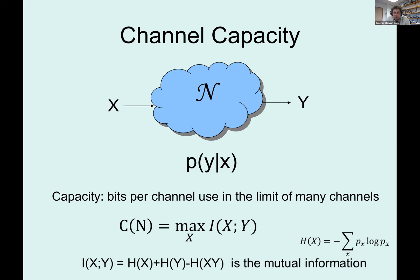The capacity is defined as the maximum number of bits you can reliably send divided by the total number of channel uses, taking the limit as n goes to infinity. For a noisy channel that takes input X and maps it to output Y with conditional probability distribution P(Y|X), there's a clean mathematical formula: it's the maximization of the mutual information between input and output, maximized over input distributions. This mutual information, using classical entropy H, tells you how much correlation you can generate between input and output.